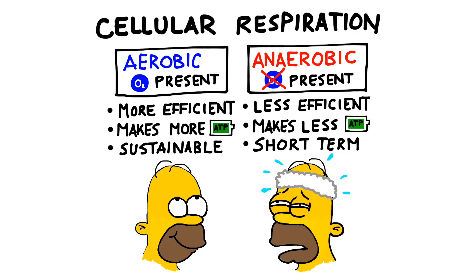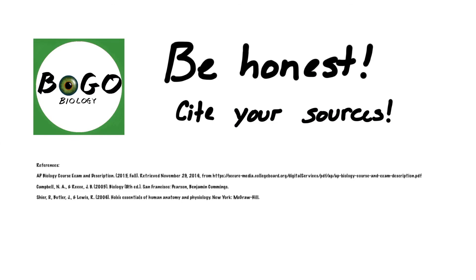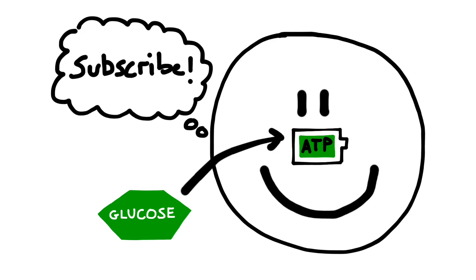Think back to this diagram. Now that you've learned a little more about how cellular respiration works, see if you can figure out why you can sustain aerobic respiration for much longer than you can anaerobic respiration. If you think you can answer this key question, definitely leave a comment in the field below. As always, please remember to be honest and to cite your sources. I've listed the resources I used to make this video below, and if you'd like to cite my work, there's a ready-made APA citation in the video description. Thanks for watching and don't forget to subscribe!